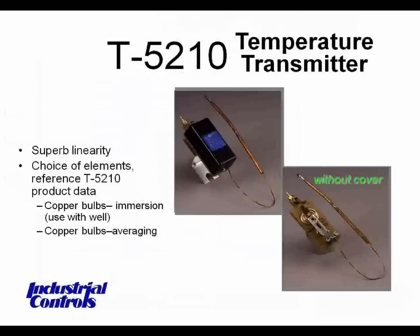Averaging elements are used to monitor temperature across a large air handler or duct where temperature can vary. Output flow is 45 SCIM. This happens to show a B bulb with a short capillary. There will also be averaging elements that can be quite long — sometimes 20 to 30 feet — that can be strung out back and forth to take care of stratification.